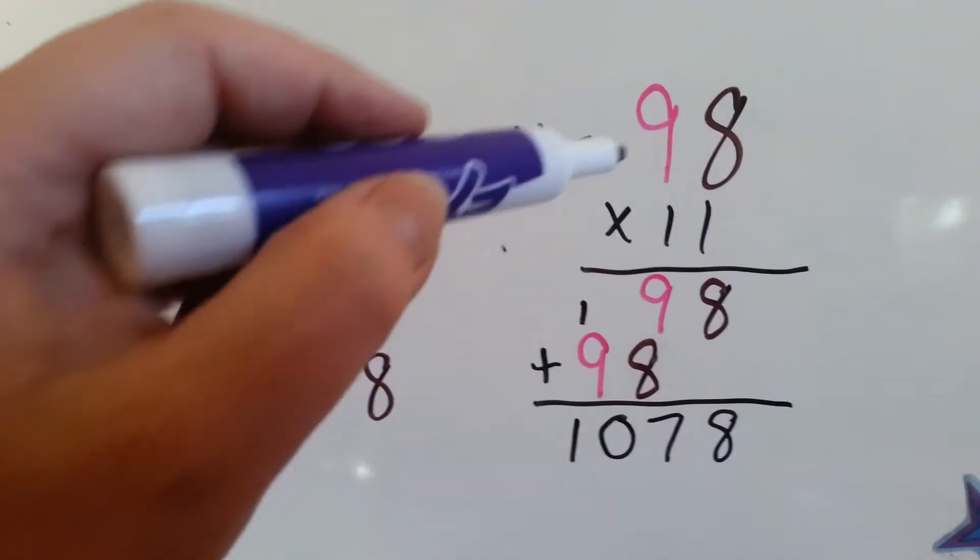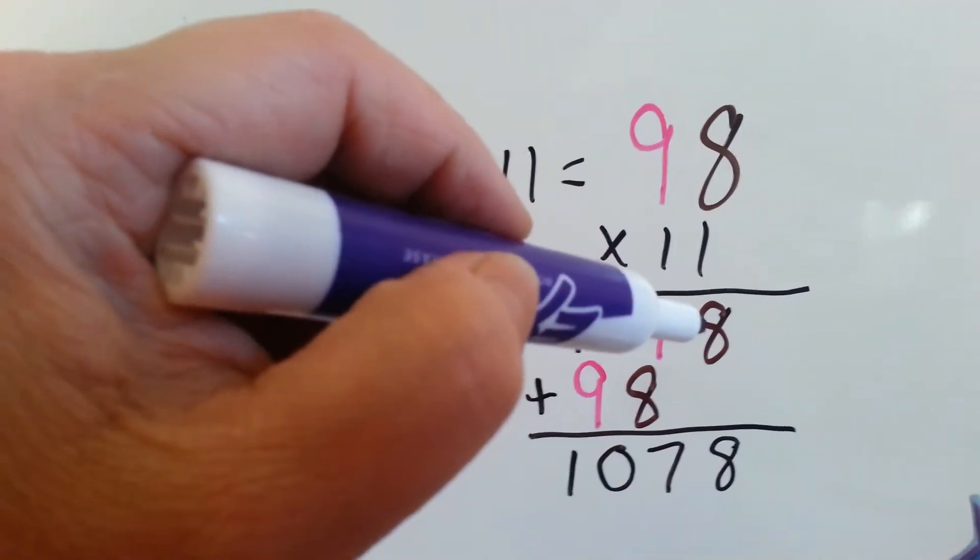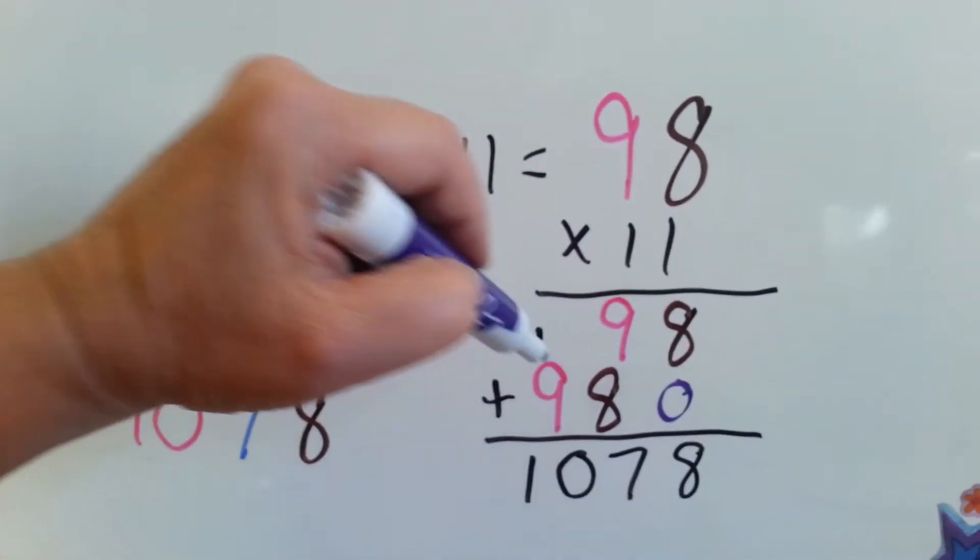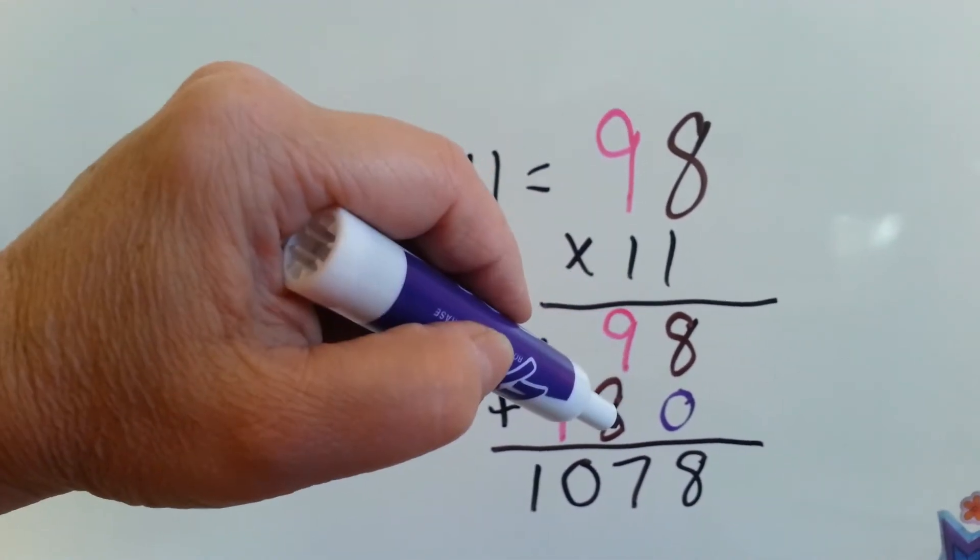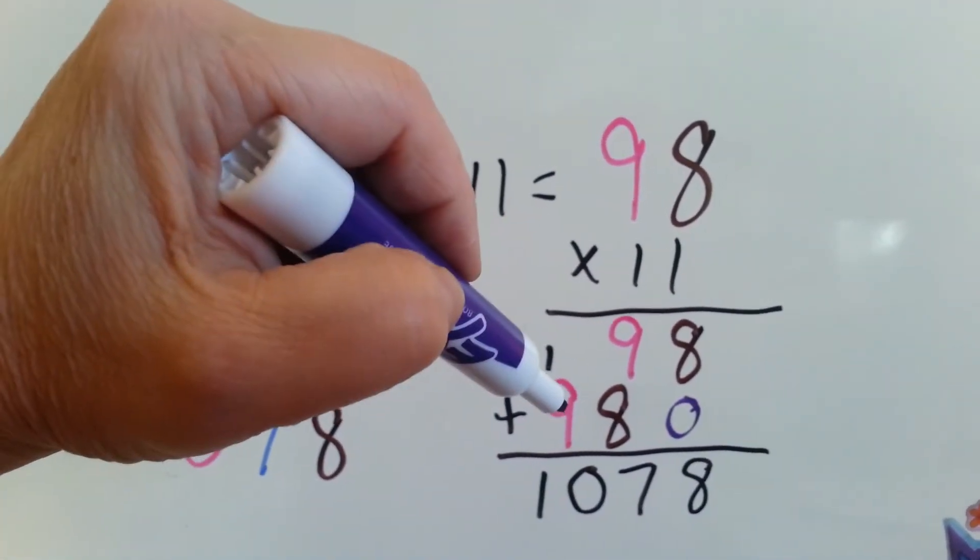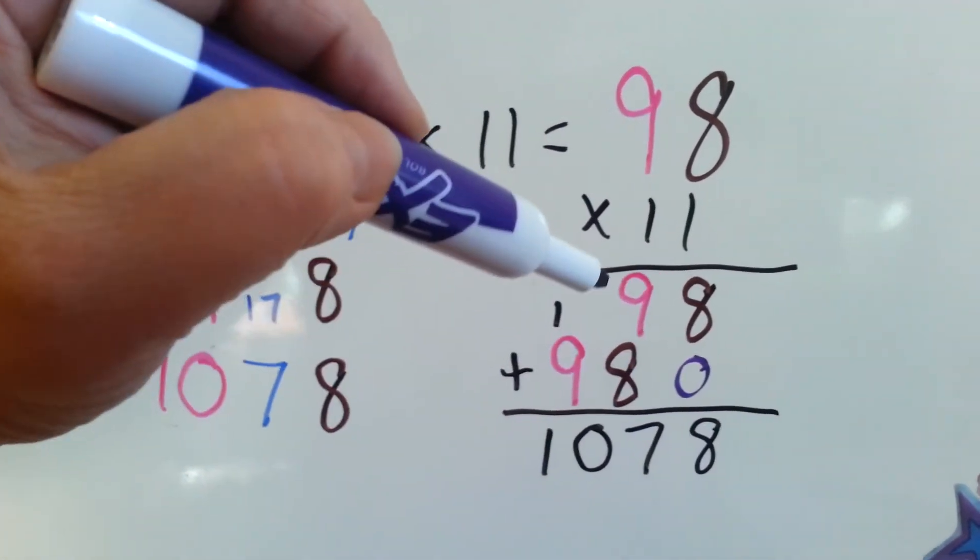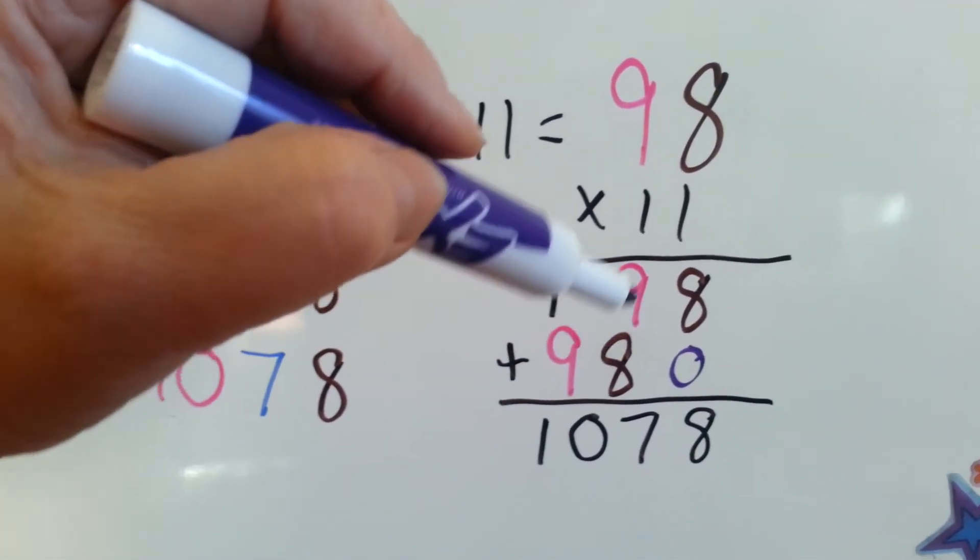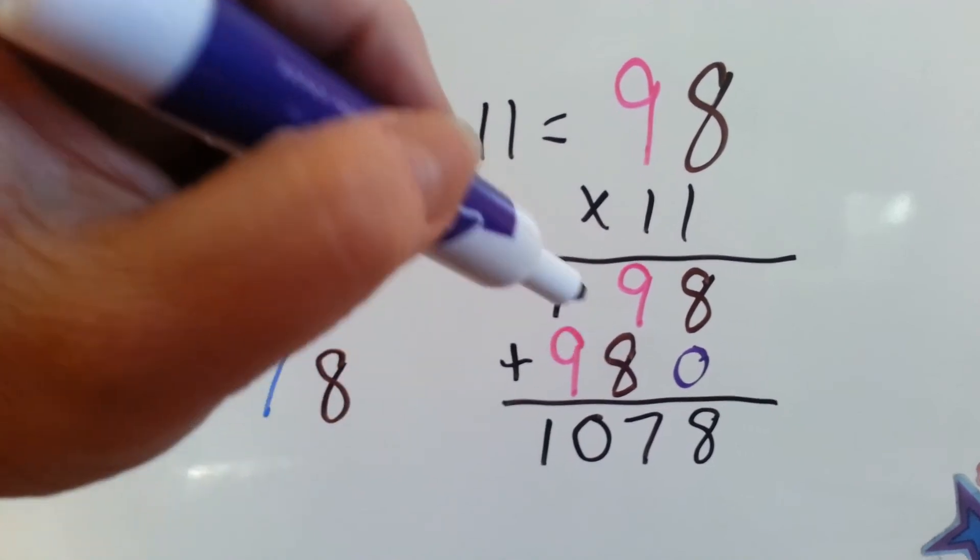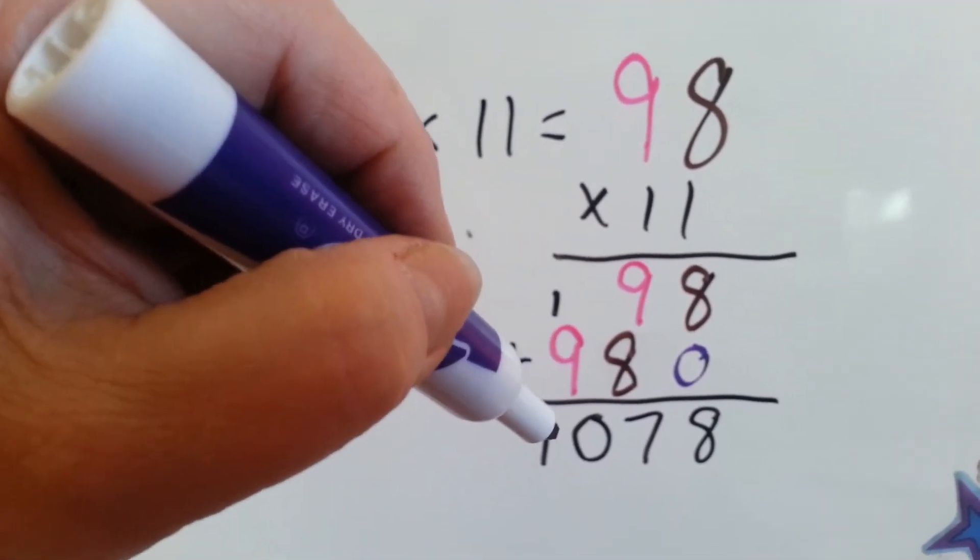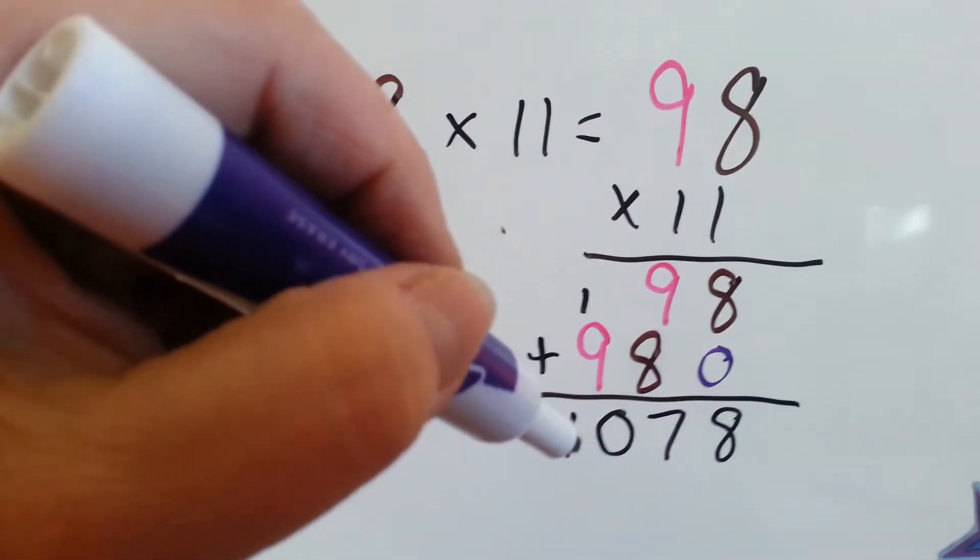98 times 11. 1 times 8 is 8. 1 times 9 is 9. We put our placeholder here. 1 times 8 is 8. 1 times 9 is 9. Now we need to add them. 8 plus 0 is 8. 9 plus 8 is 17. We carry the 1 and put the 7 down. 9 and 1 is 10. Now what are we going to do? Well, look.